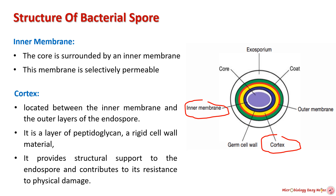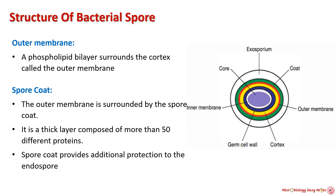The cortex is a layer of peptidoglycan, a rigid cell wall material, located between the inner membrane and the outer layer of the endospore. It occupies as much as half the spore volume, providing structural support and contributing to its resistance to physical damage. A phospholipid bilayer surrounds the cortex, called the outer membrane.